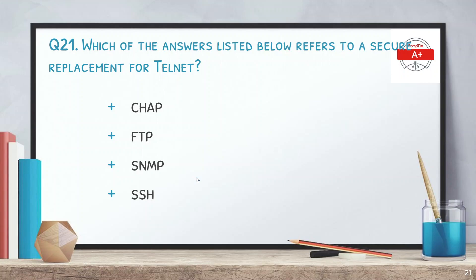Question 21: which of the answers refers to a secure replacement of Telnet? The answer is SSH. SSH does all the functions of Telnet with the additional feature of encrypting communication between the remote device and the client.